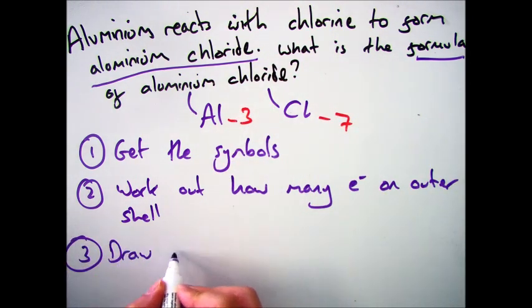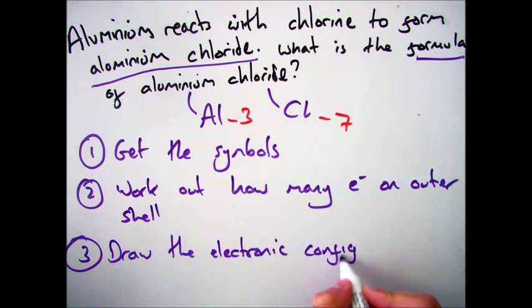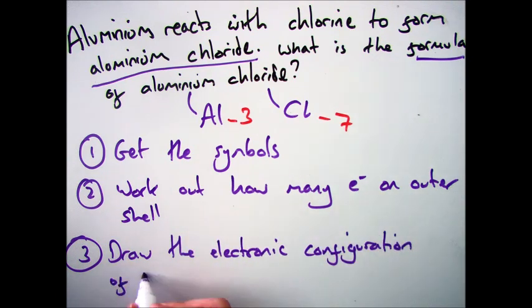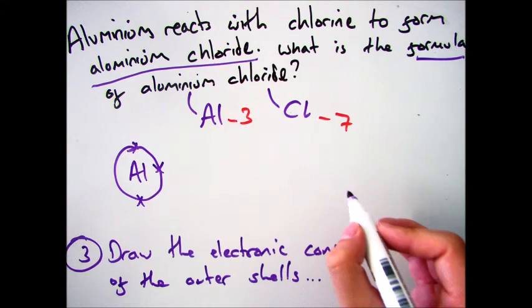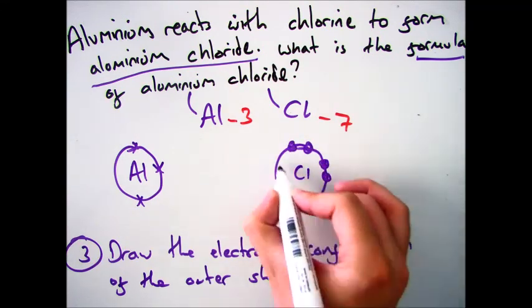Number three, you need to actually draw the electronic configuration. Remember just focusing on the outer shells here, both aluminum and chlorine. So aluminum has 3 in the outer shell and chlorine has 7.